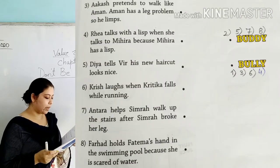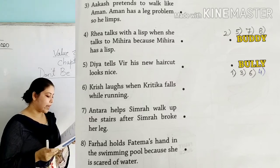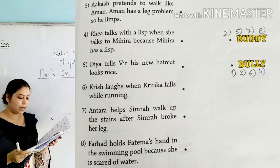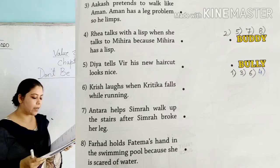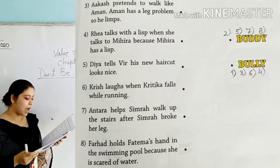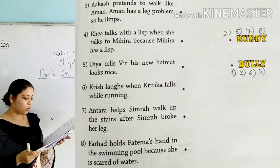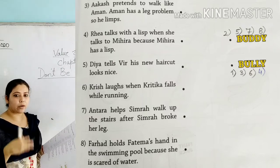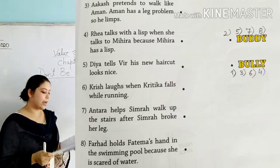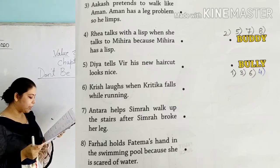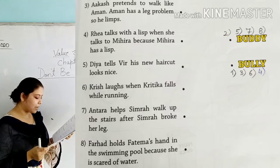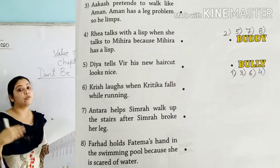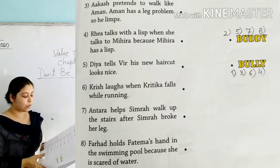Fifth: 'Dhea tells Rhea her new haircut looks nice' — if you tell your friend their haircut looks nice, that is a good thing, so this is a buddy. Sixth: 'Prish laughs when Pritika falls while running' — this is bullying, so we write bully. Seven: 'Antra helps Simra walk up the stairs after Simra hurts her leg' — you are helping your friend, so this is a buddy. Eight: 'Farha holds Pati's hand in the swimming pool because she is scared of the water, trying to tell her not to be scared' — this is a buddy.